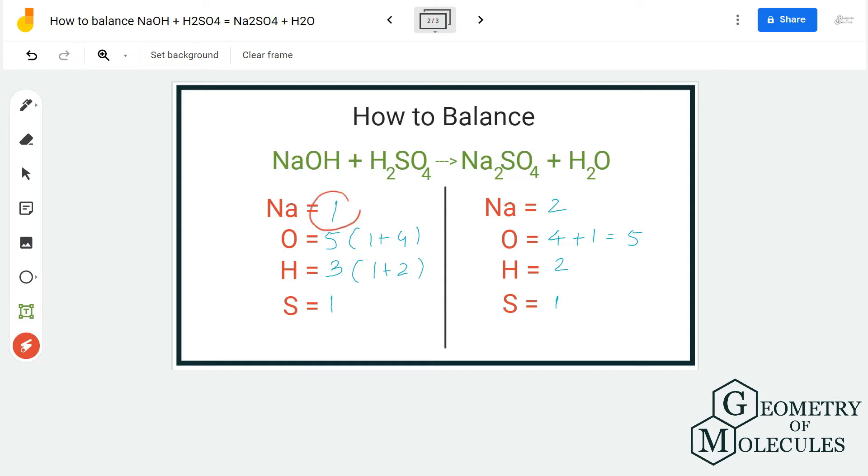Now you can see here that on the reactant side we only have one atom of sodium, but there are two atoms of sodium on the product side. So we need to first balance that. What I'm going to do is place 2 over here.